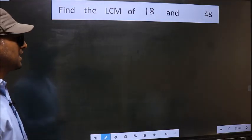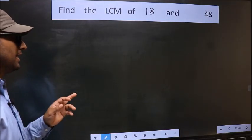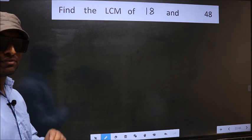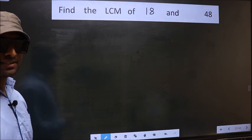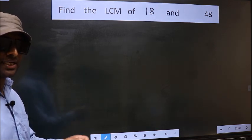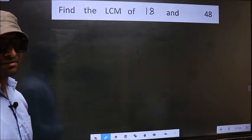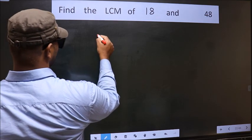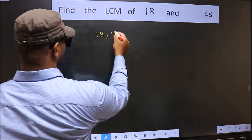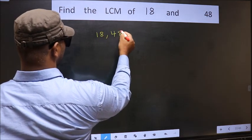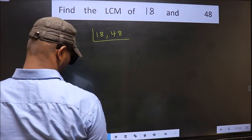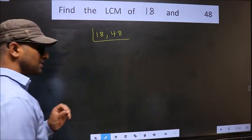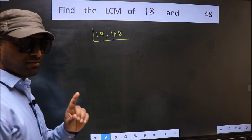Find the LCM of 18 and 48. To find the LCM, first we should frame it in this way — that is 18 and 48. This is your step 1.